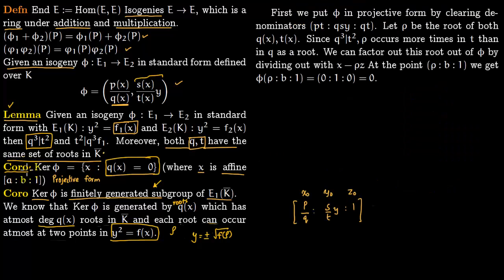Now we prove the corollary — that the kernel of phi is generated precisely by the roots of this denominator, where X is in affine form. We begin by writing the isogeny in projective form as (X0 : Y0 : Z0), clearing denominators by multiplying throughout by Q times T. Now rho is a common root of both Q and T, and since Q cubed divides T squared, rho occurs more times in T than in Q.